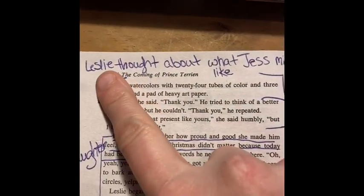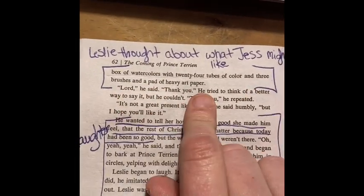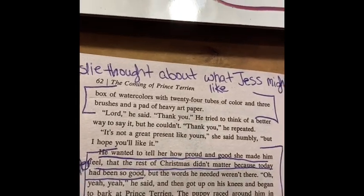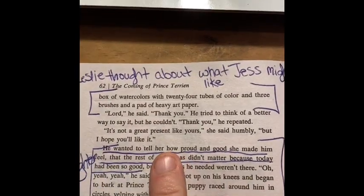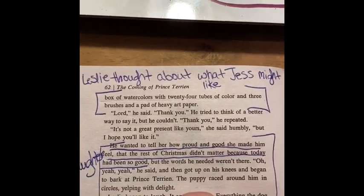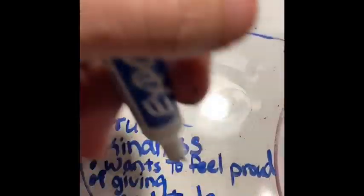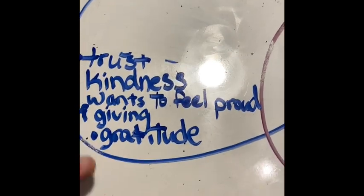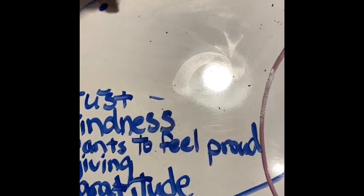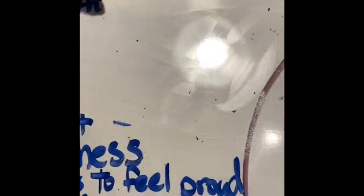Shortly after that, we find out what Leslie got Jess for Christmas — a box of watercolors, paintbrushes, and heavy art paper. We know Jess has always wanted that. His secret desire is to be an artist, and his parents don't approve — especially his dad. But Leslie thought about what Jess truly loves. Another characteristic in this relationship is thoughtfulness. Both characters really thought about what the perfect gift would be.